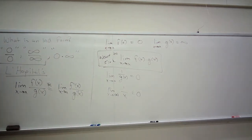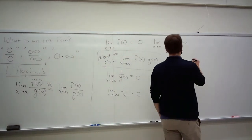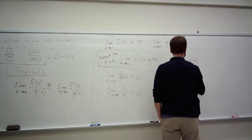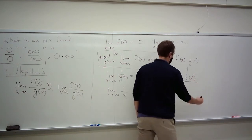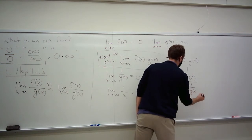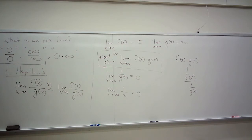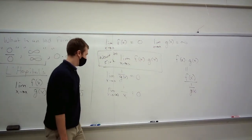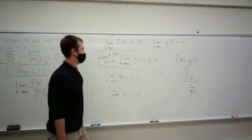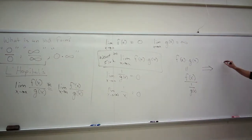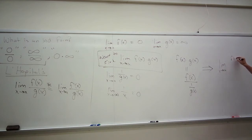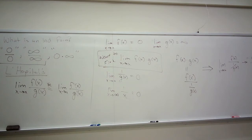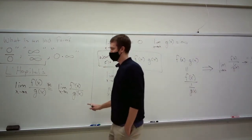And this is the trick: f times g of x is the same as f divided by 1 over g of x. So if you have something in indeterminate form of 0 times infinity, you can rewrite it using this handy little trick in order to get an indeterminate form of 0 over 0. Now that is something L'Hôpital's rule can handle.